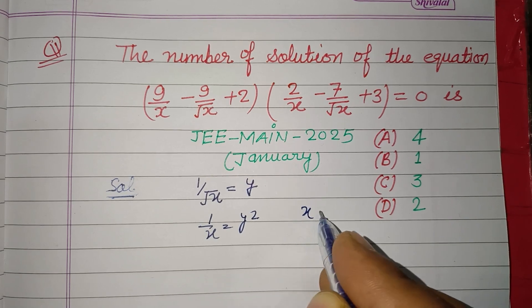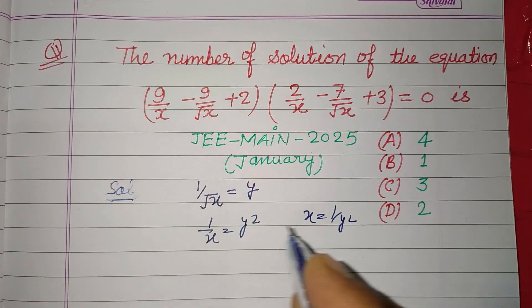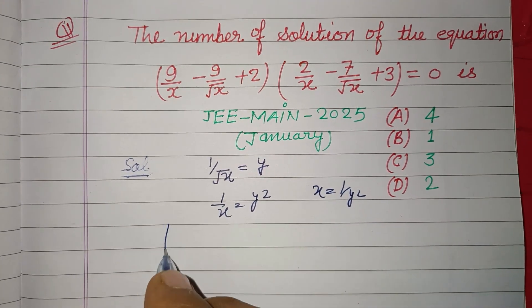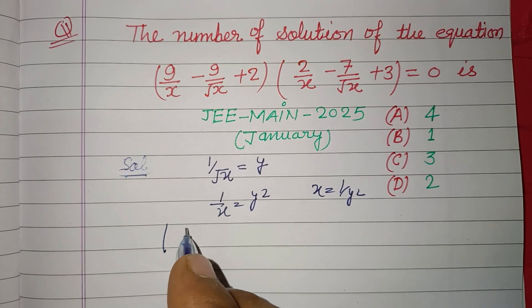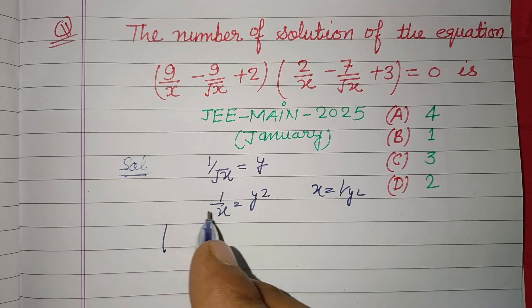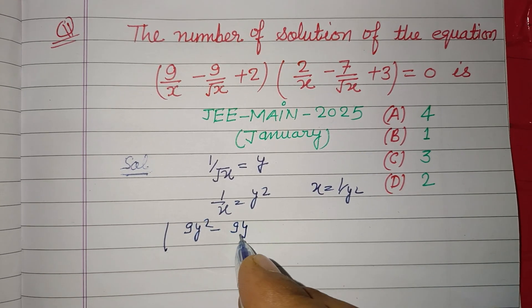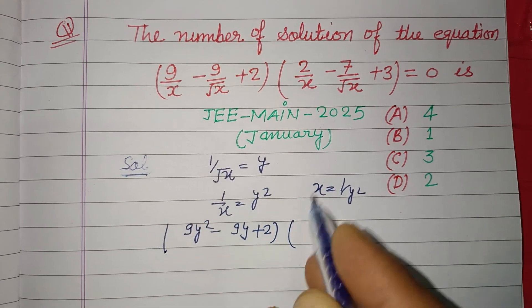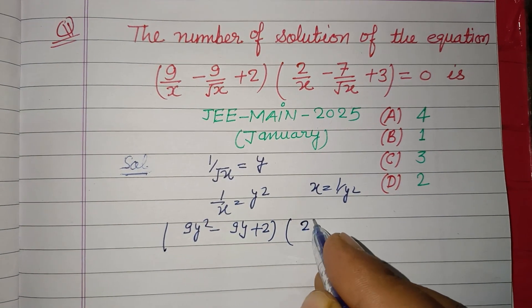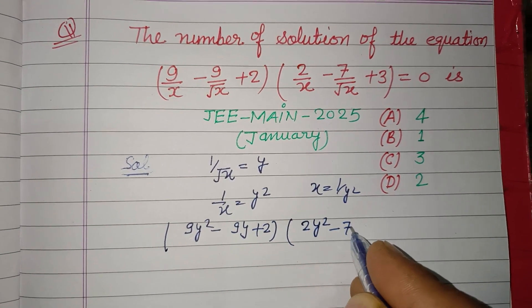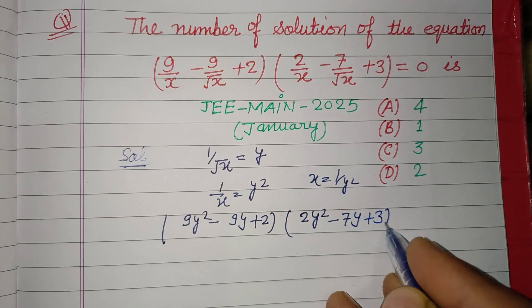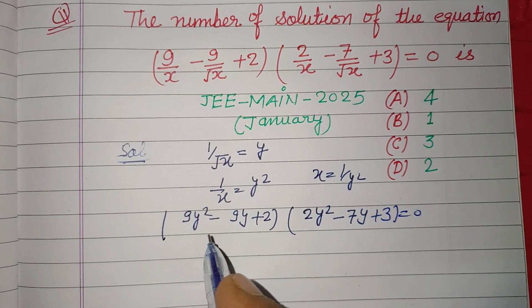Putting these values, we get 9/x means 9y² - 9y + 2, and this is 2y² - 7y + 3 = 0. Here we got two quadratic equations in multiplication, so we factorize them.